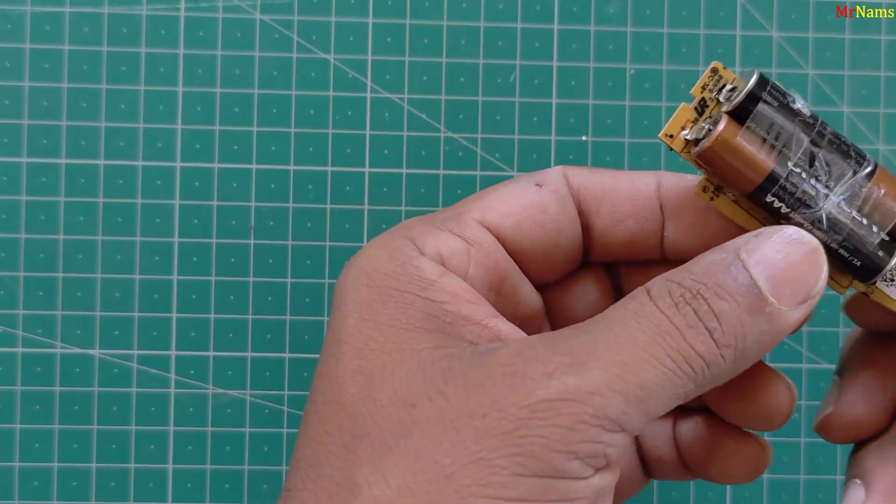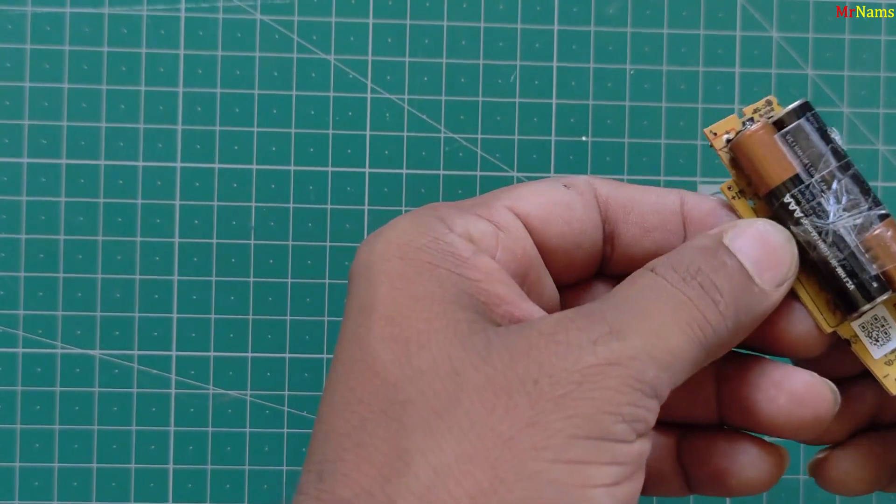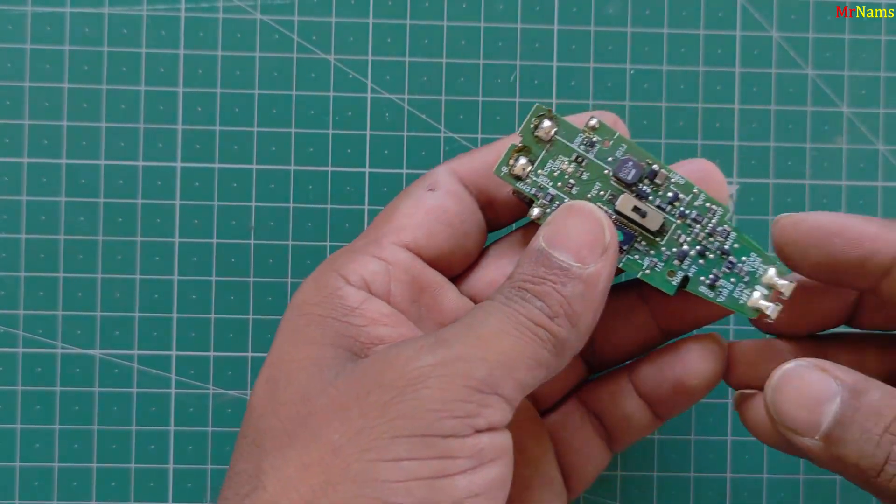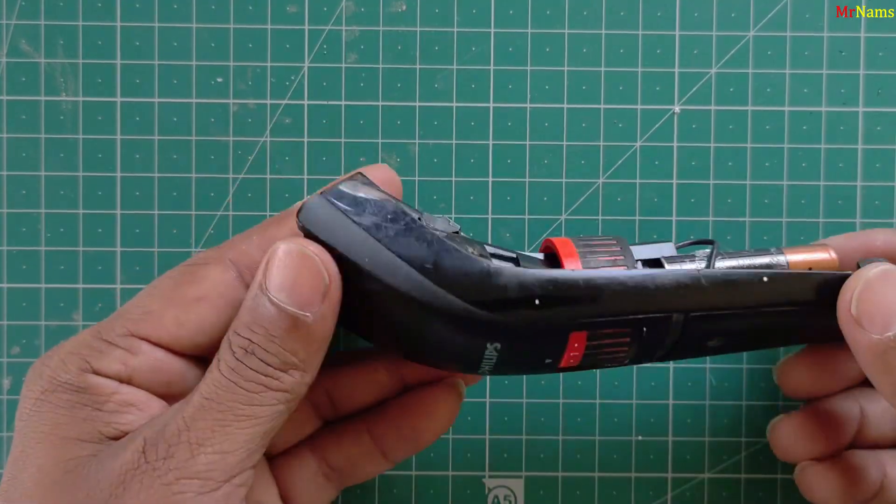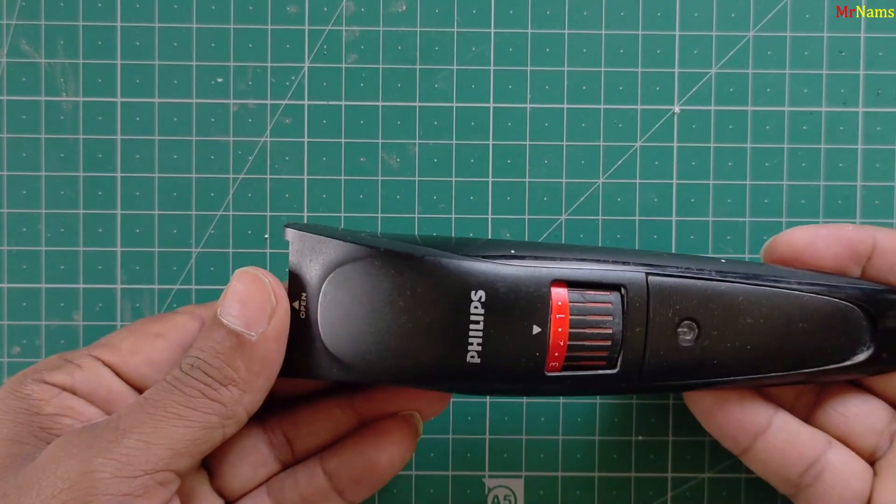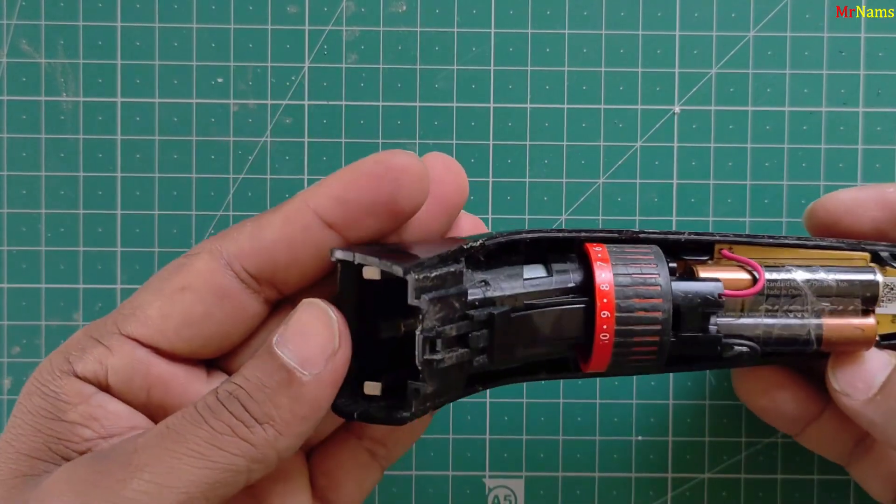Step 5. Reconnect the power wires. Solder the power wires back to the PCB. Test the trimmer before closing it up to ensure it runs properly with the power button.